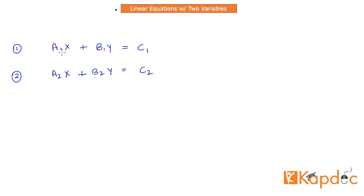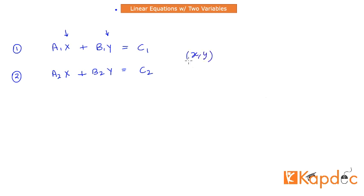What is common between these two linear equations is the variable x and the variable y. So when we talk about finding the solution to linear equations, we are talking about what is that one unique pair of values of x and y that satisfies both of these equations simultaneously.